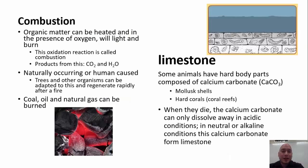Combustion: Organic matter can be heated and in the presence of oxygen will light and burn. This oxidation reduction is called combustion. Products from this include carbon dioxide and water. Combustion can be naturally occurring or caused by humans. Trees and other organisms can be adapted to this and regenerate rapidly after a fire. For example, sequoia trees, their cones need to be exposed to fire so they open and release their seeds to start the next generation.